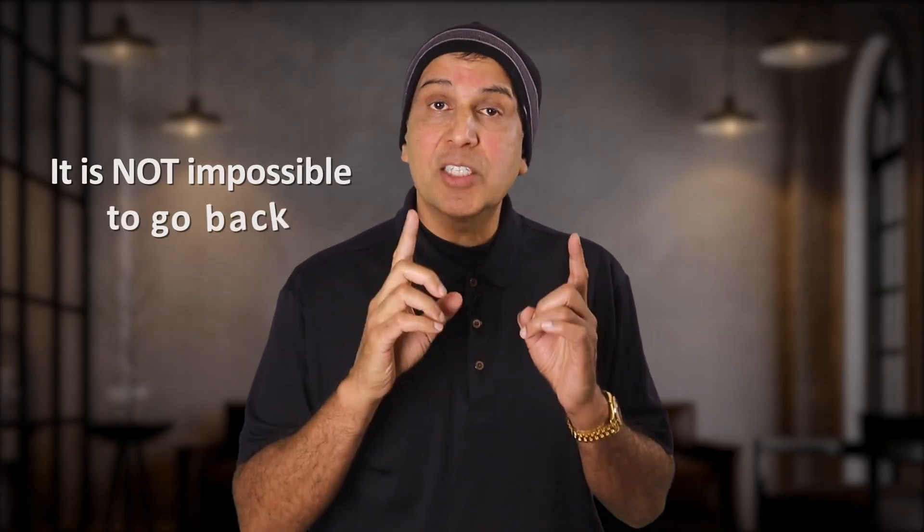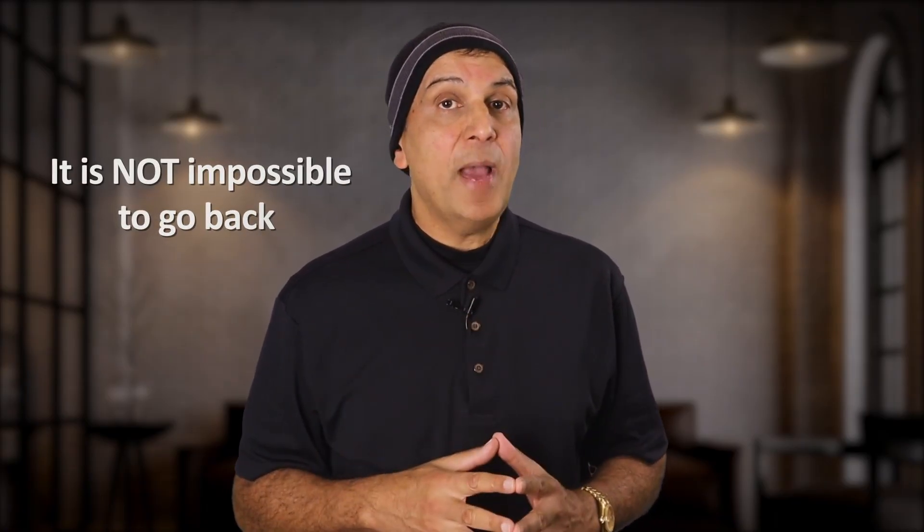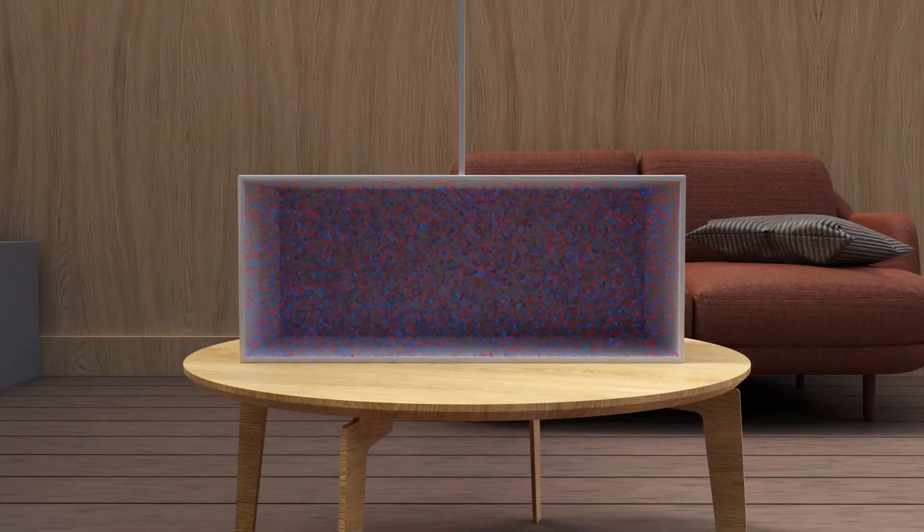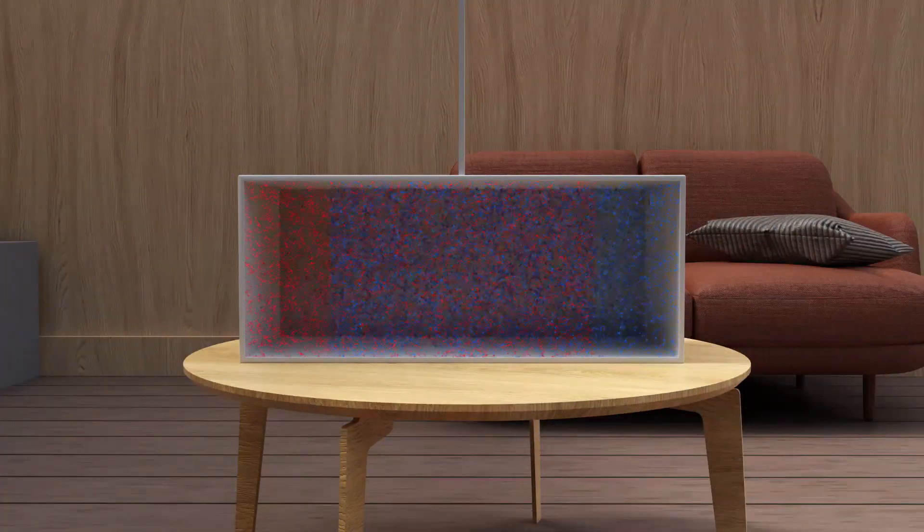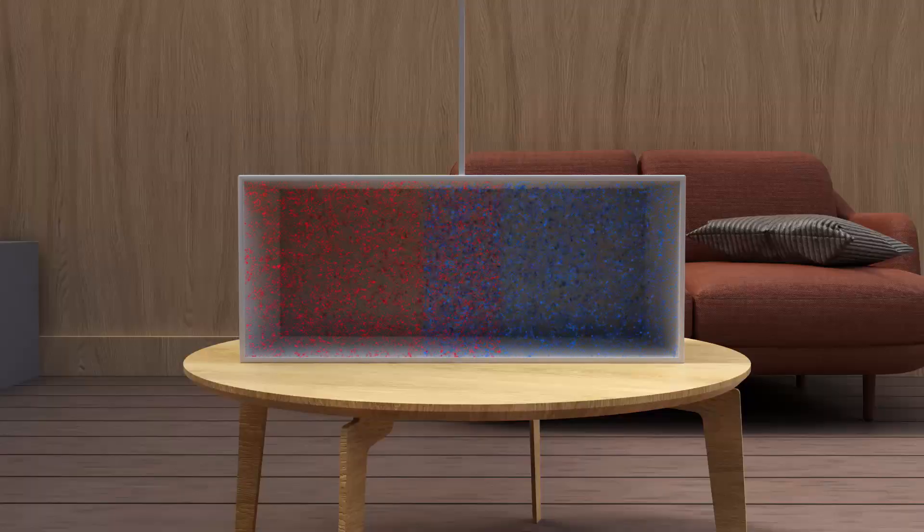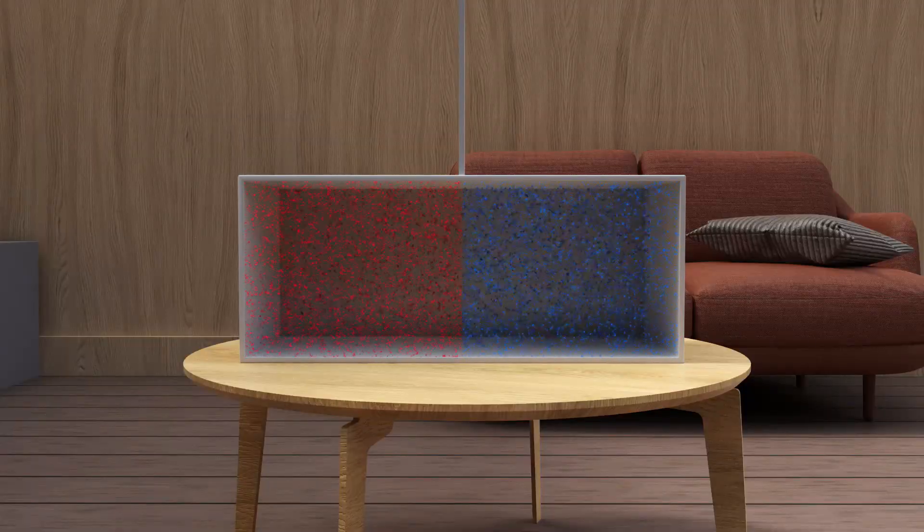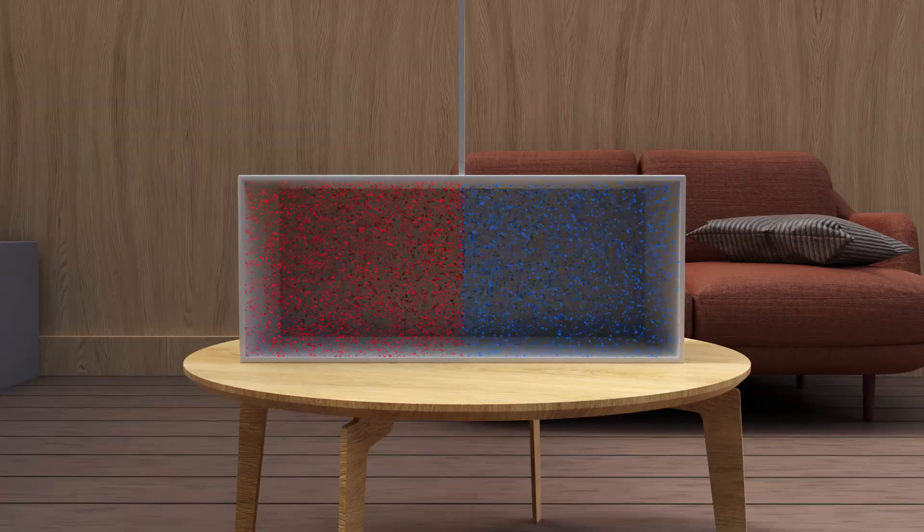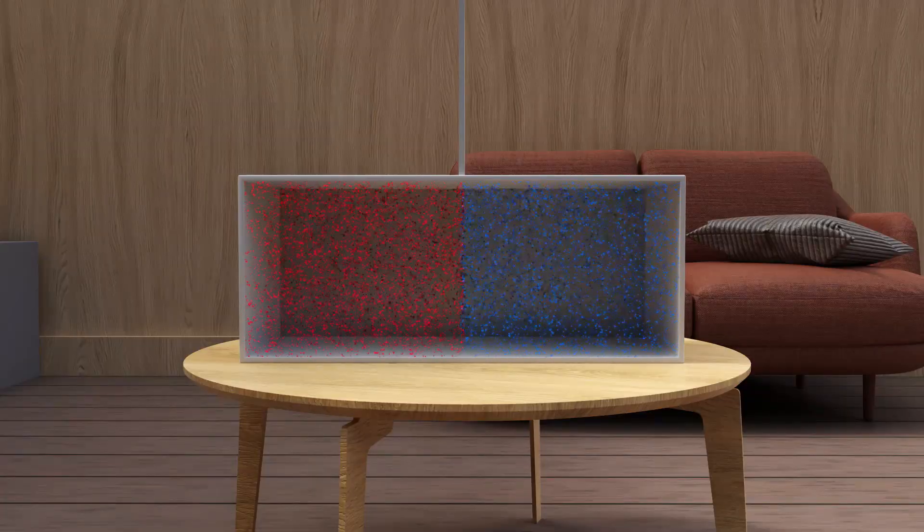Now, it's important to point out that it's not impossible for the mixture of gases to go back to the prior ordered state. But the problem is that there are so many possible places for the particles to be in the box, that the probability of all the red particles to be in one part of the box, and all the blue gas particles to be in the other part of the box, is effectively zero.